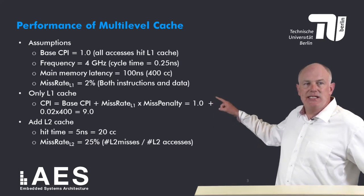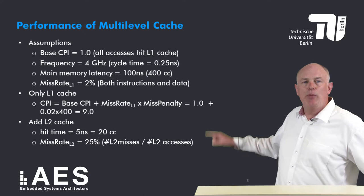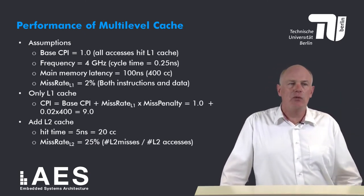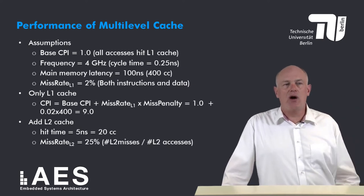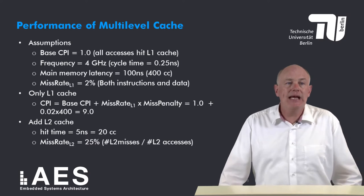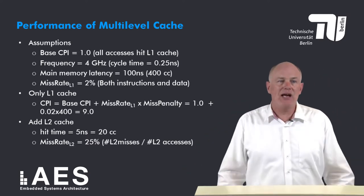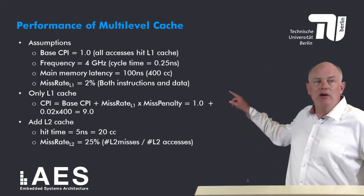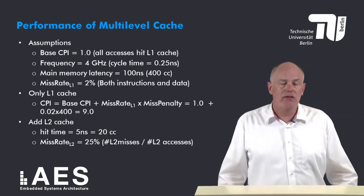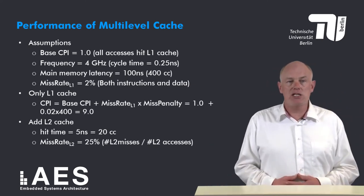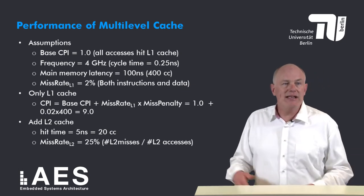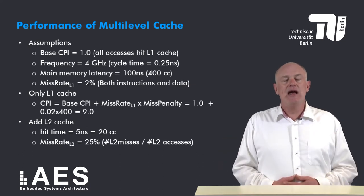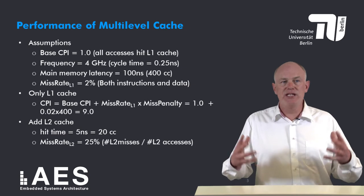I assume that the base cycles per instruction (base CPI) is 1.0, under the assumption that all accesses hit in the level 1 cache. The CPU frequency is 4 GHz, meaning a cycle time of 0.25 nanoseconds or 250 picoseconds. The main memory latency is 100 nanoseconds, corresponding to 400 processor clock cycles. The L1 miss rate for combined instructions and data is 2%, which is a reasonable assumption.